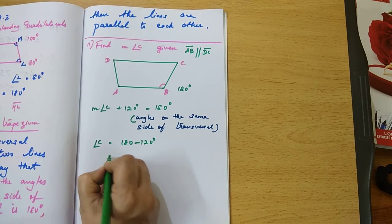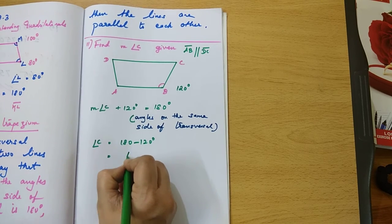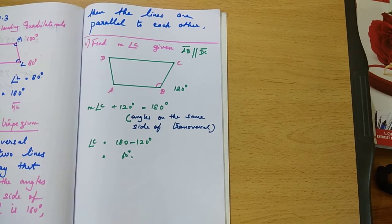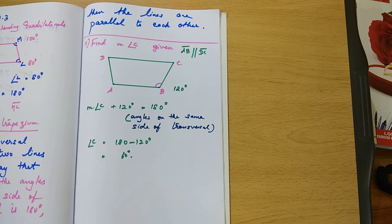So this sum is relatively easier than the other but the same property is being used.